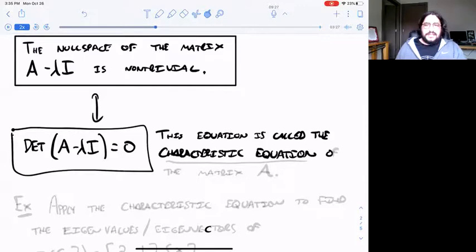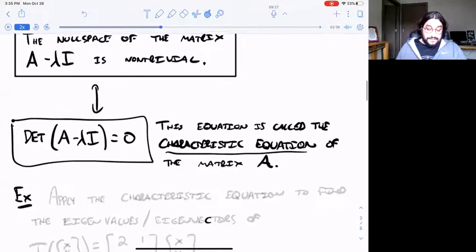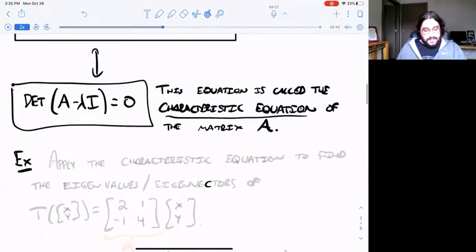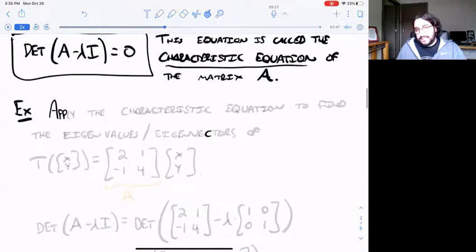This equation determinant(A minus lambda I) equals zero, this comes up a lot, this is called the characteristic equation of a matrix. If you just have the left hand side it's called the characteristic polynomial, once you set it equal to zero that's the characteristic equation.